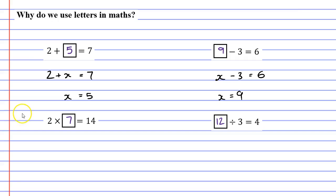Moving on to the third example. Instead of 2 times square equals 14, we would write 2 times x equals 14. Then you would solve it and say well, x must equal 7 because 2 times 7 will equal 14.